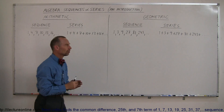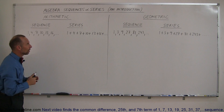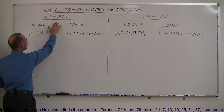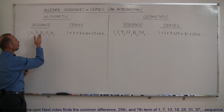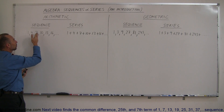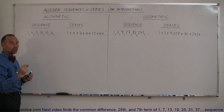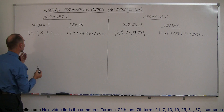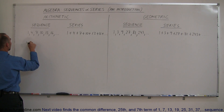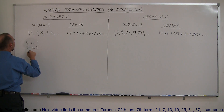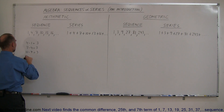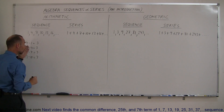They're not just any set of numbers — there is a very specific type. For an arithmetic sequence or series, we can take any number and subtract the previous number from it, and the difference will always be exactly the same. For example: 4 minus 1 equals 3, 7 minus 4 equals 3, 10 minus 7 equals 3, 13 minus 10 equals 3.